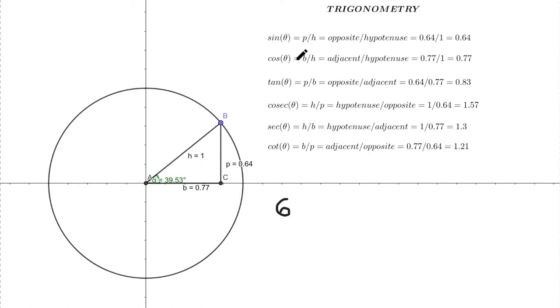For example, sine theta is p by h and cos theta is b by h and so and so forth. But before that, let us first understand the nomenclature. ABC is a right angle triangle, right angled at A. So here angle C is 90 degrees. Now AB is the hypotenuse, BC is the perpendicular from B, and AC is the base.